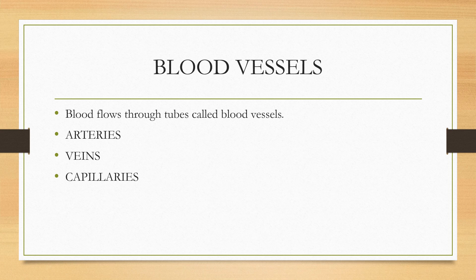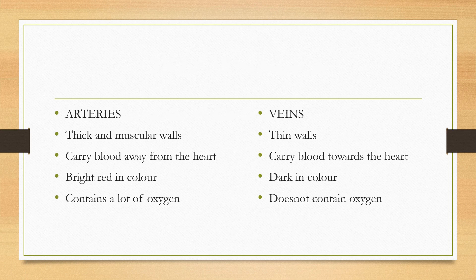Blood flows through tubes called blood vessels. We have arteries, veins and capillaries. Arteries have thick and muscular walls. They carry blood away from the heart — always remember A for arteries and A for away. So arteries will always carry blood away from the heart. They are bright red in color and they contain a lot of oxygen.